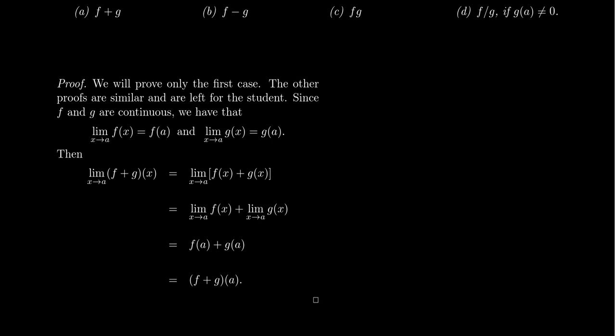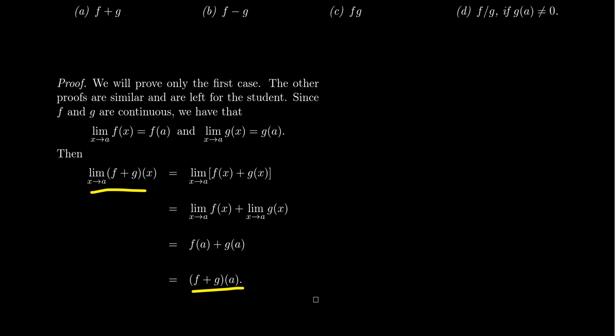Now the limit of f of x, because f is continuous, will just be f of a. The limit of g of x, because g is continuous, will be g of a. In which case f of a plus g of a is exactly what f plus g at a does. And so we see that the limit of f plus g as x gets close to a is just f plus g evaluated at a. This proves that f plus g is continuous.